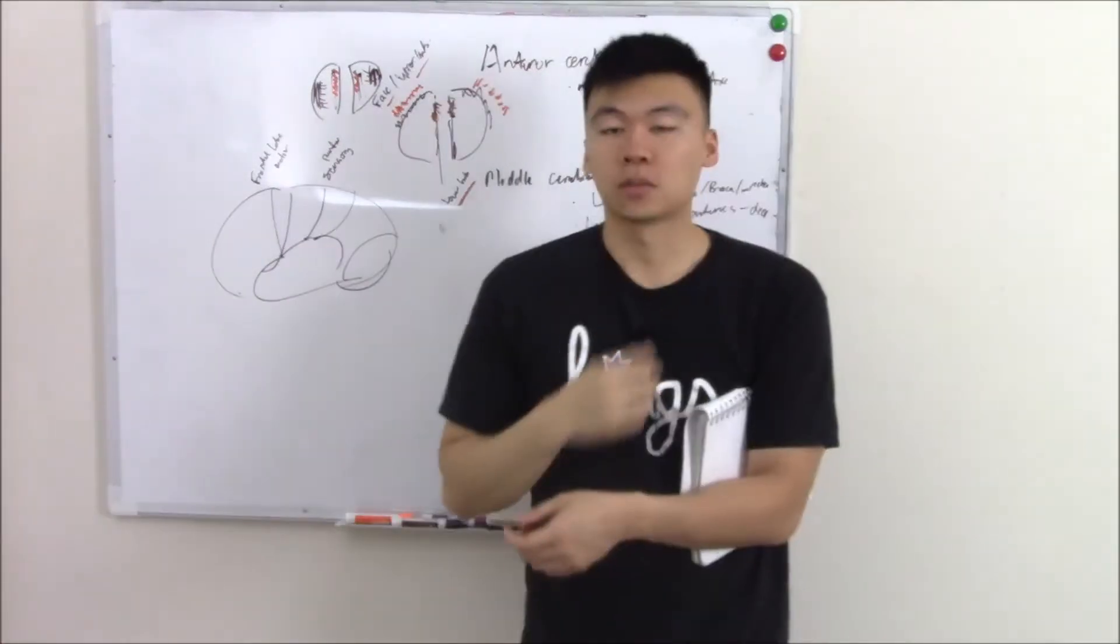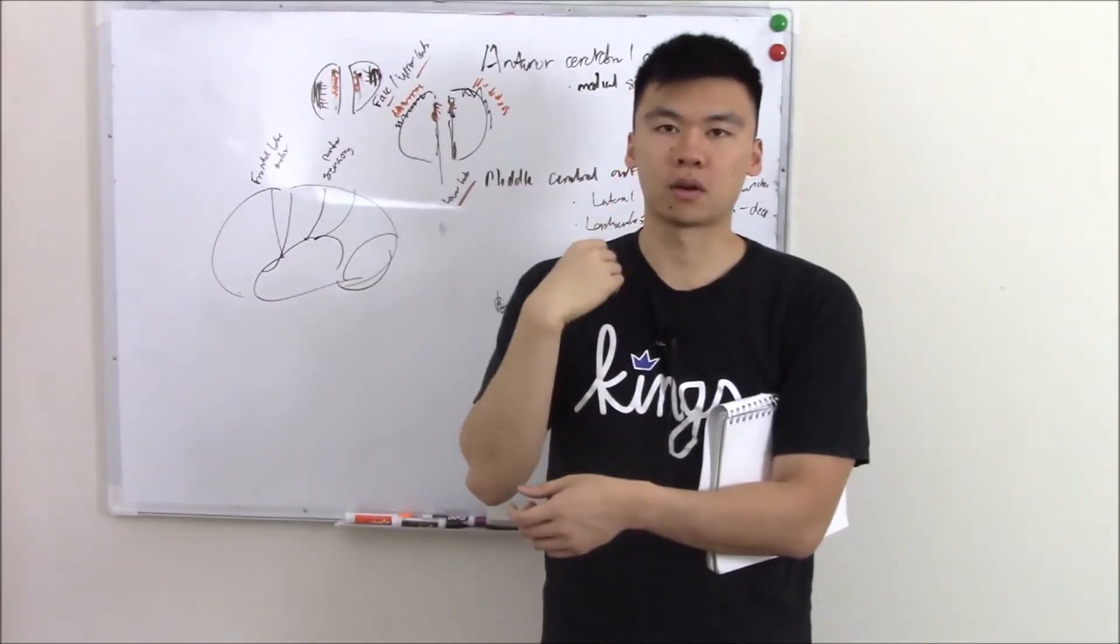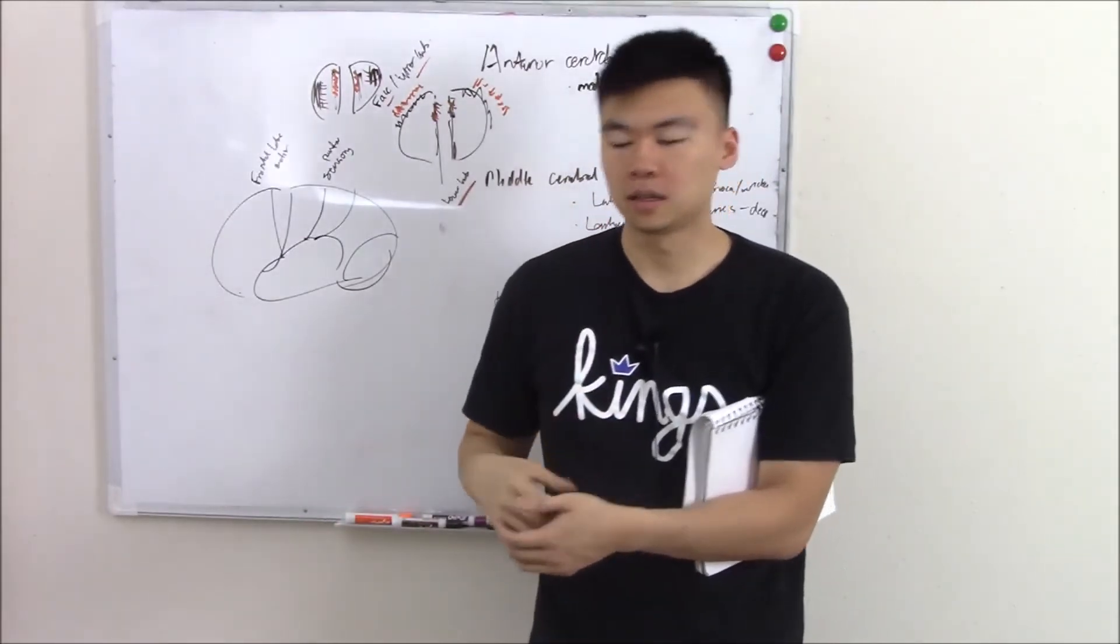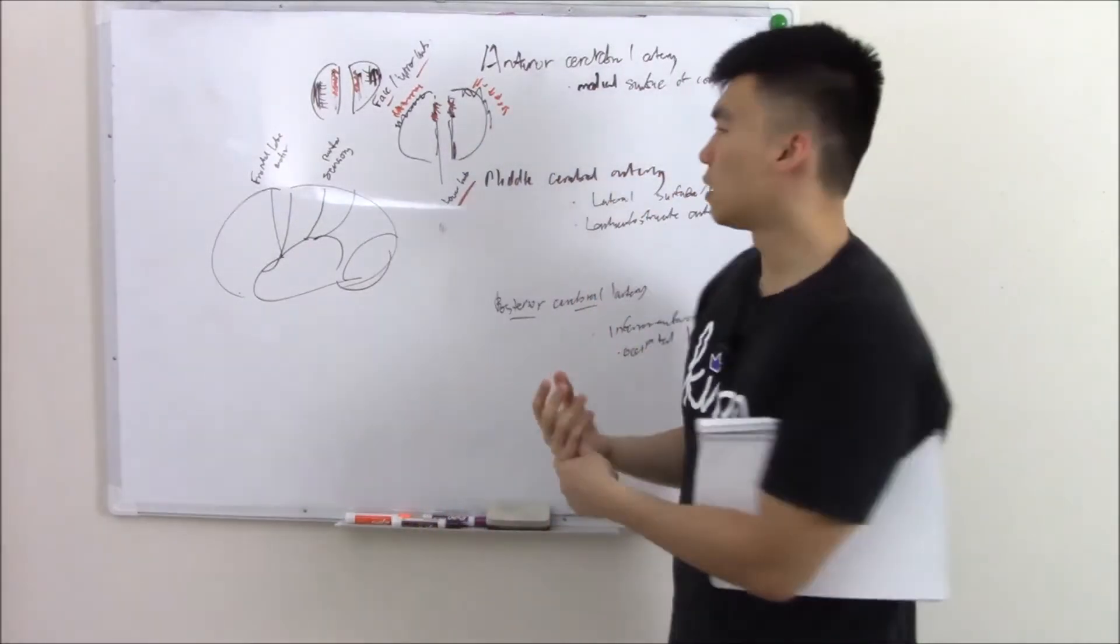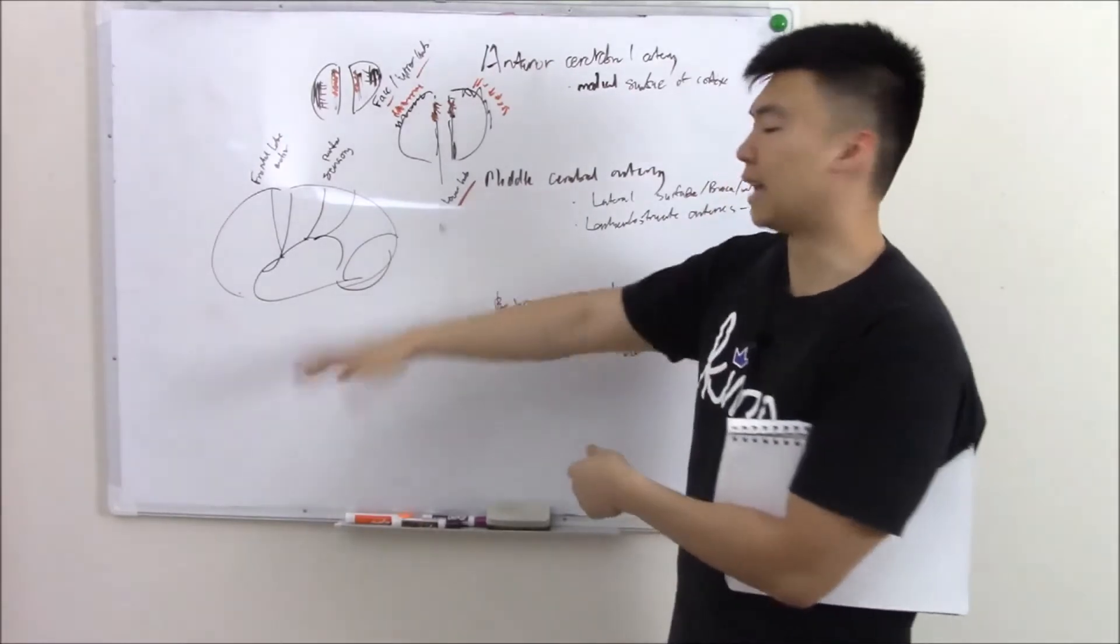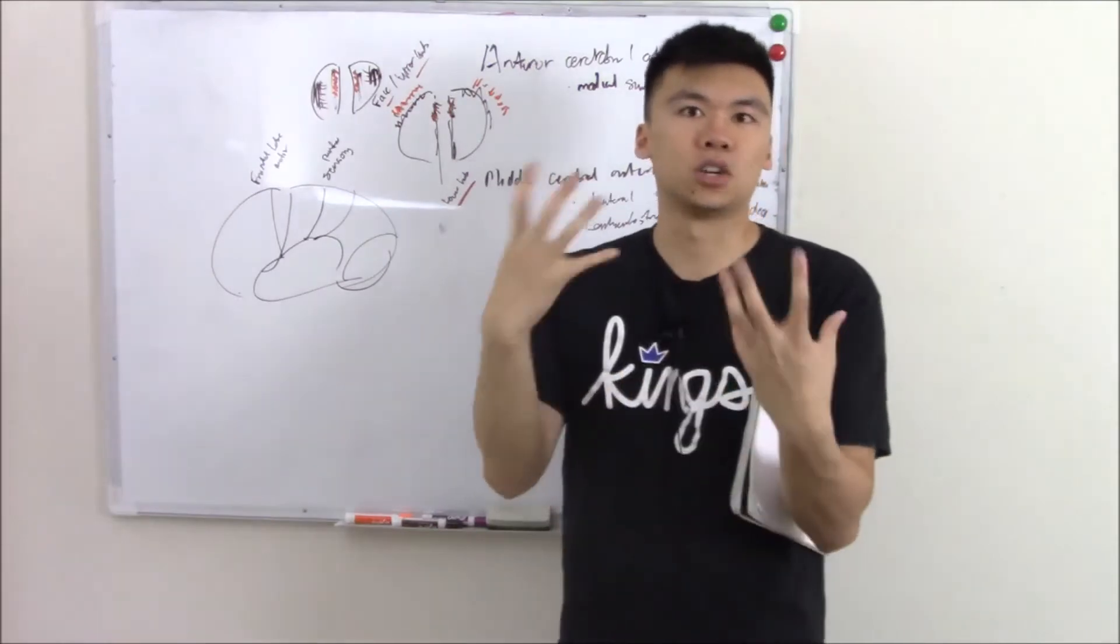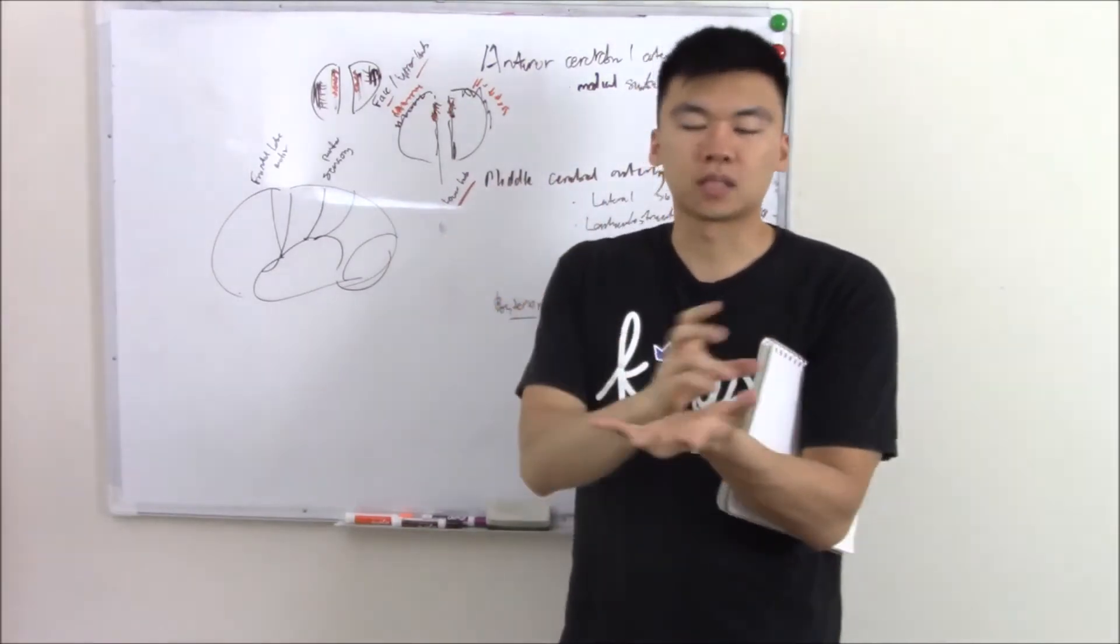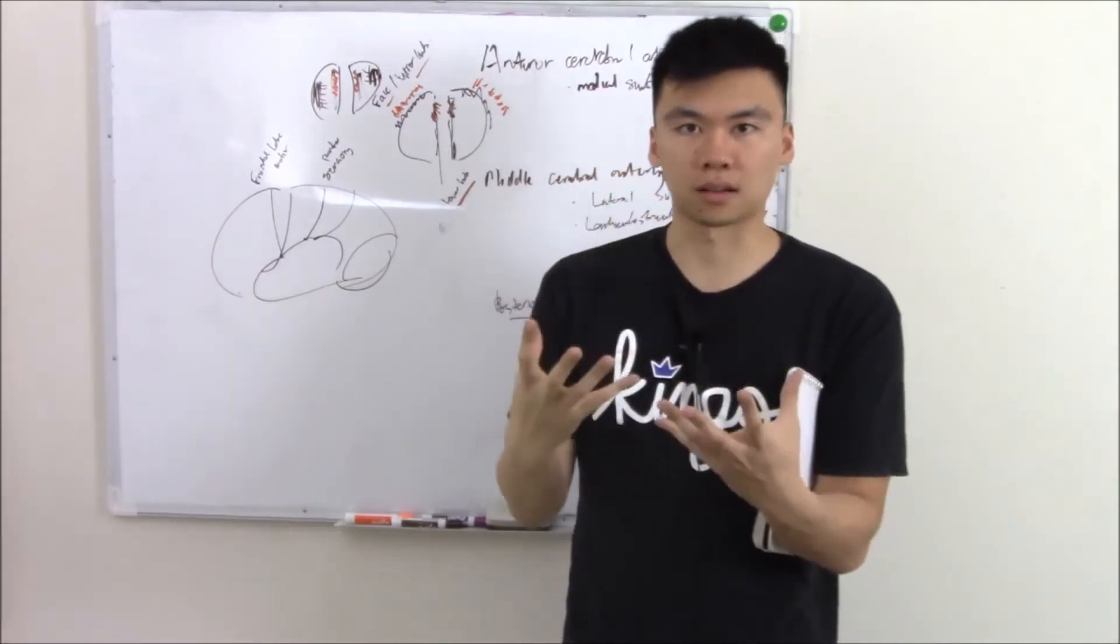Let's see if you really understand. A person has a right middle cerebral artery thrombosis. What do you think would happen? They'll have left, because we said it's often contralateral, left face and upper limb deficits. So you understand that you're kind of like a human angiogram. But just by reading the question stem, you can understand what particular artery was blocked.